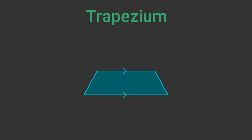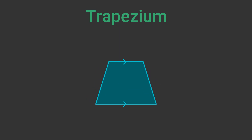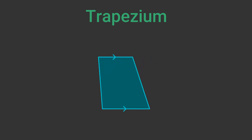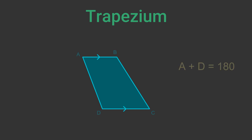Trapeziums can vary in shape. Like rectangles, they can be tall or short, wide or thin. But also, the angles of the two sides can vary — this changes the relative sizes of the two parallel sides. The two angles A and D add up to 180 degrees, because they are allied angles. Angles B and C also add up to 180 degrees for the same reason. An alternative name for a trapezium is a trapezoid.